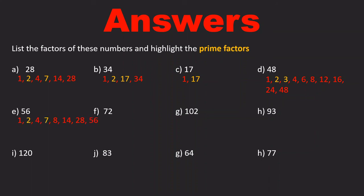56 has got factors 1, 2, 4, 7, 8, 14, 28, and 56 — but the prime factors are 2 and 7. Question F, 72 has got factors 1, 2, 3, 4, 8, 9, 18, 24, 36, and 72, with prime factors 2 and 3. Question G, 102 has got factors 1, 2, 3, 6, 17, 34, 51, and 102 — and the primes are 2, 3, and 17. Question H, 93 has got factors 1, 3, 31, and 93 — not many there, because 3 and 31 are both prime numbers. Notice that 93 is the same thing as 3 times 31 — it's the product of these two prime numbers. We'll get into that later.